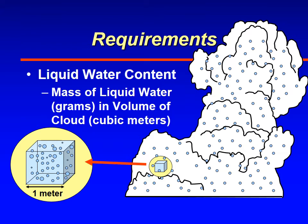If you can envision flying through cloud, opening up a box that's one meter by one meter by one meter, trying to capture some of that cloud, bringing it back down to the ground, and then counting and weighing those water droplets — that would give you the grams of liquid water in a cubic meter of cloud.